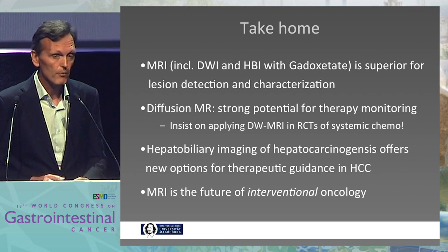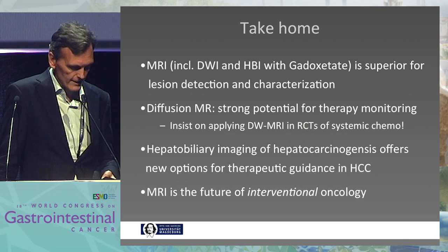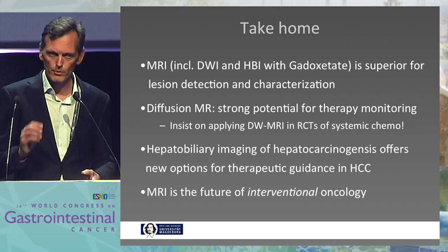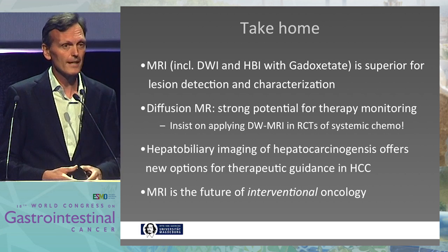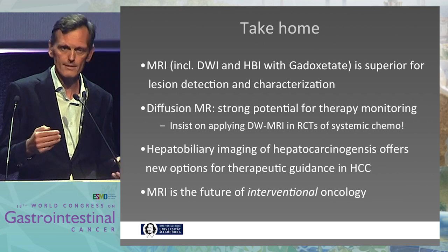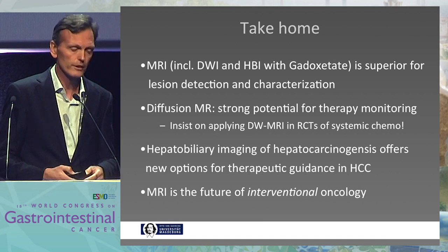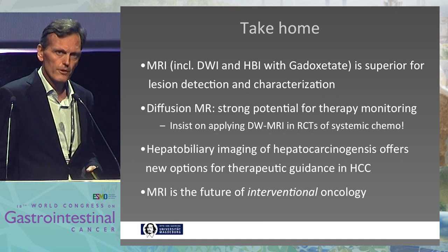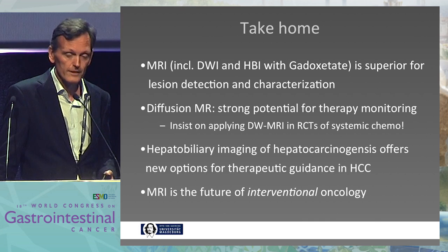In summary: MRI, specifically when including diffusion-weighted imaging and hepatobiliary imaging, is superior for lesion detection and characterization. Diffusion MRI has strong potential for therapy monitoring. I urge you — because it's you who decide — to insist on applying diffusion-weighted MRI in randomized controlled trials of systemic chemotherapy as a secondary endpoint, because this could be extremely interesting for therapeutic monitoring in the future. Hepatobiliary imaging of hepatocarcinogenesis offers new options for therapeutic guidance in HCC. And MRI is definitively the future of interventional oncology.